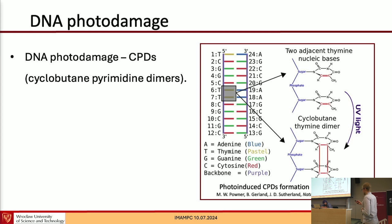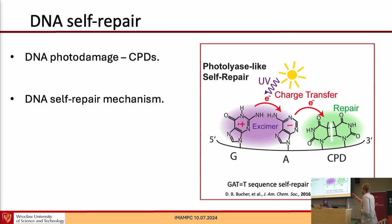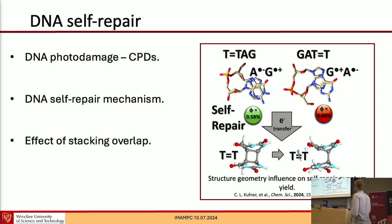However, there is also a different UV-induced mechanism, a self-repair mechanism that works in DNA strands, which could lead to repairing of such cyclobutane dimers by transferring electrons from guanine to adenine and then to such thymine dimer. This mechanism was studied by global scientists, including my supervisor, Rafał Szabla. Earlier this year, they published a paper in which they made an interesting observation.